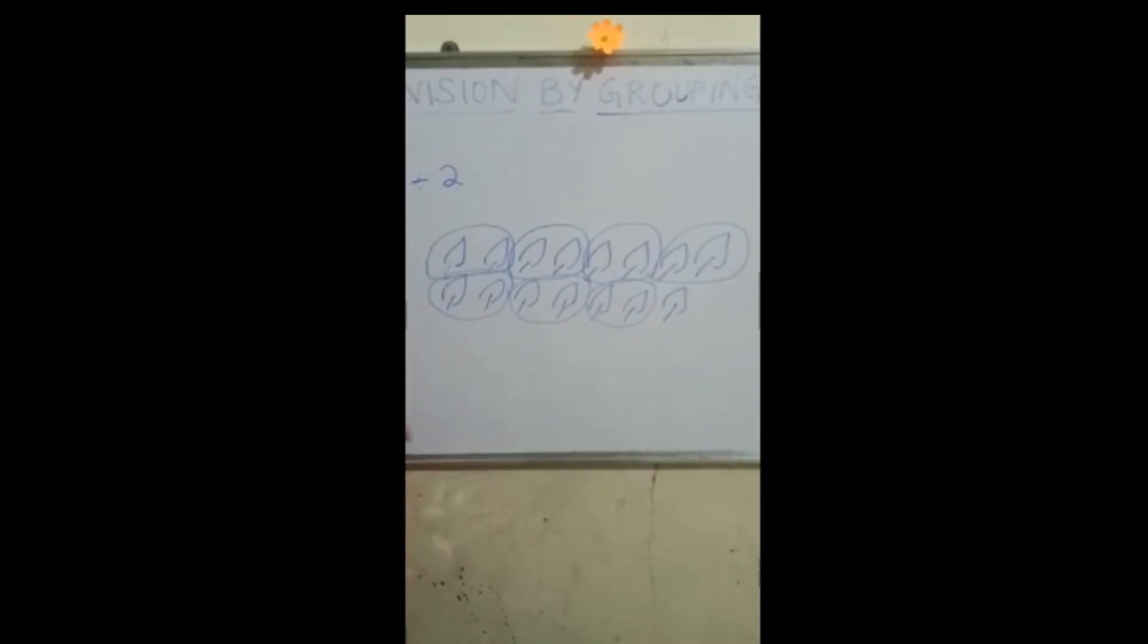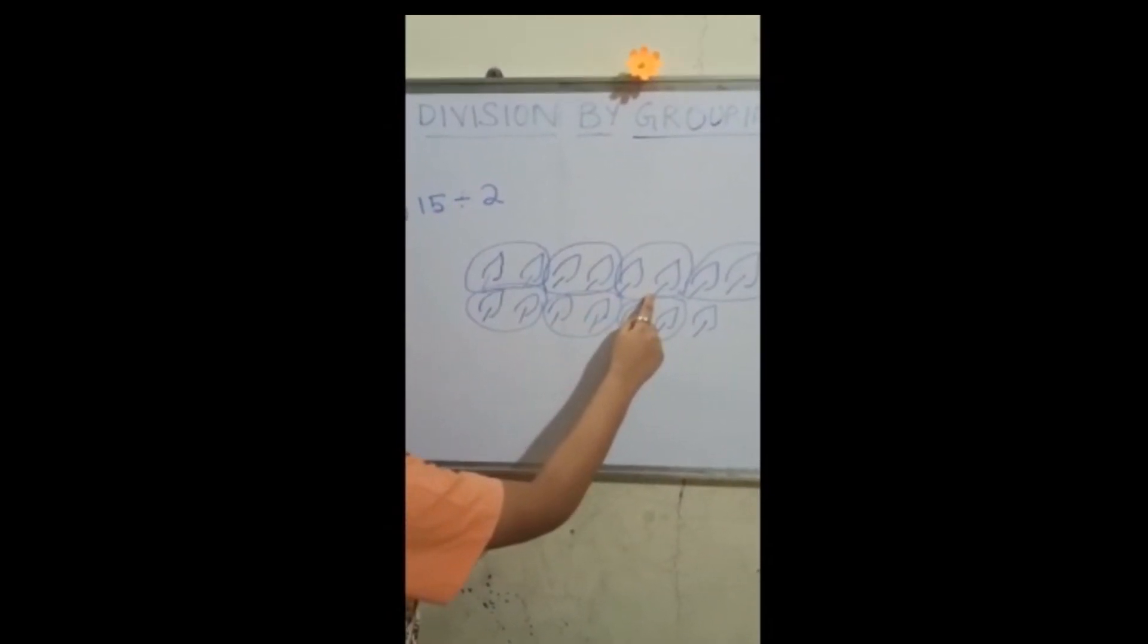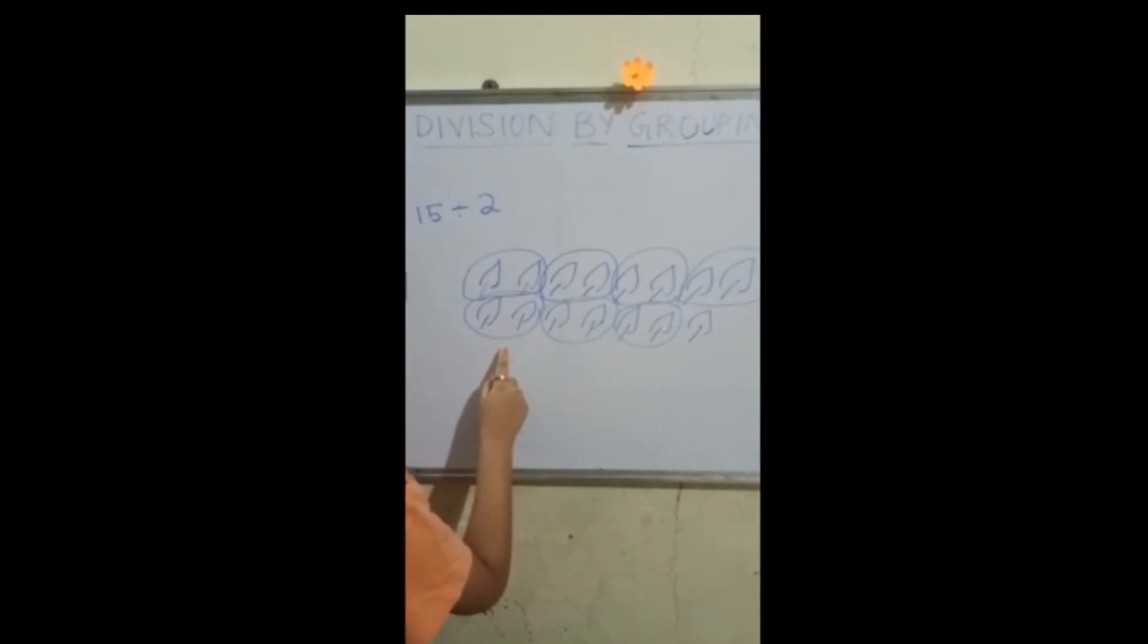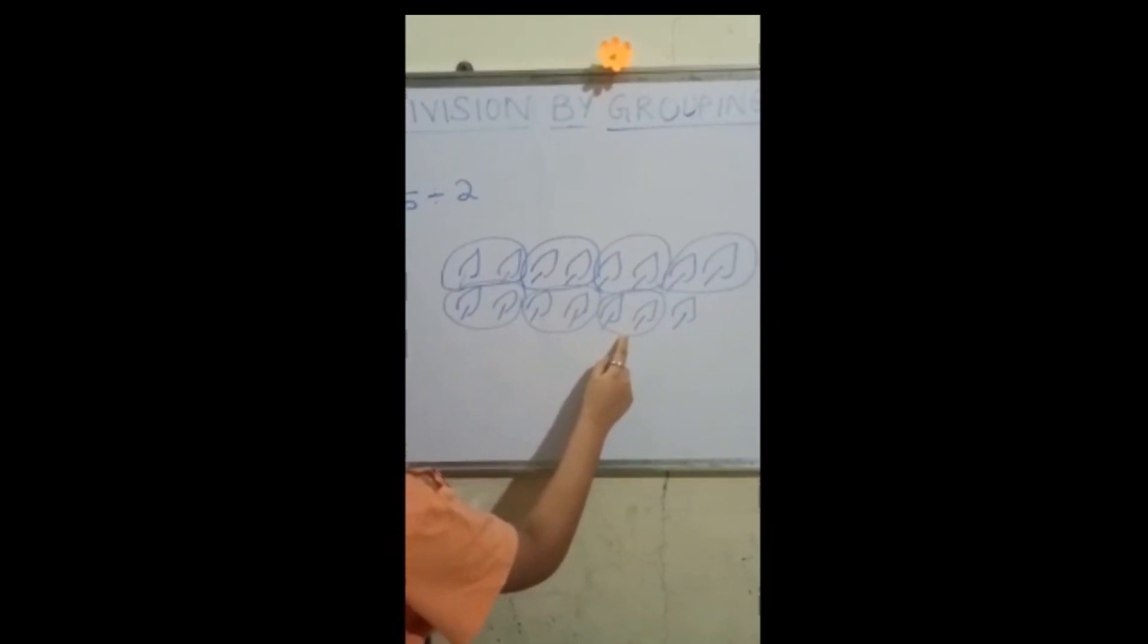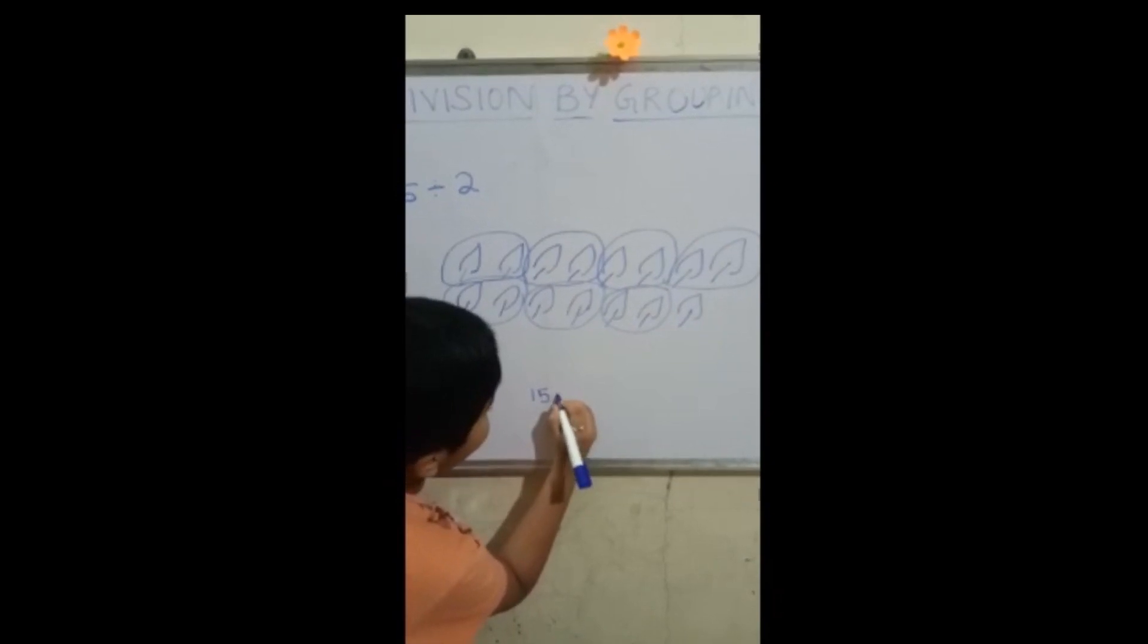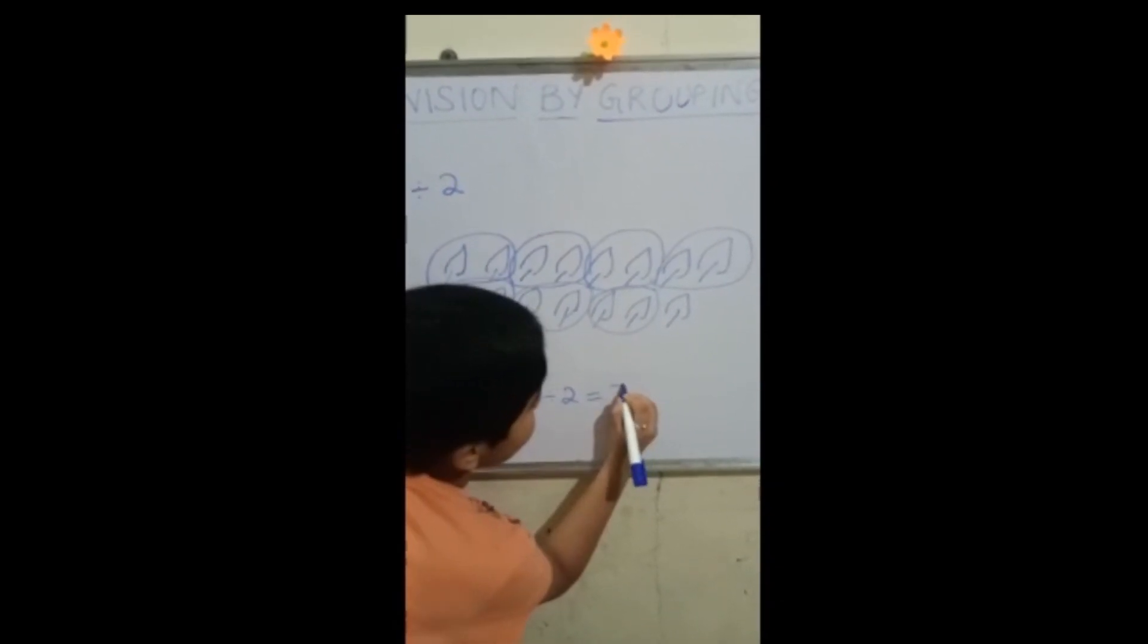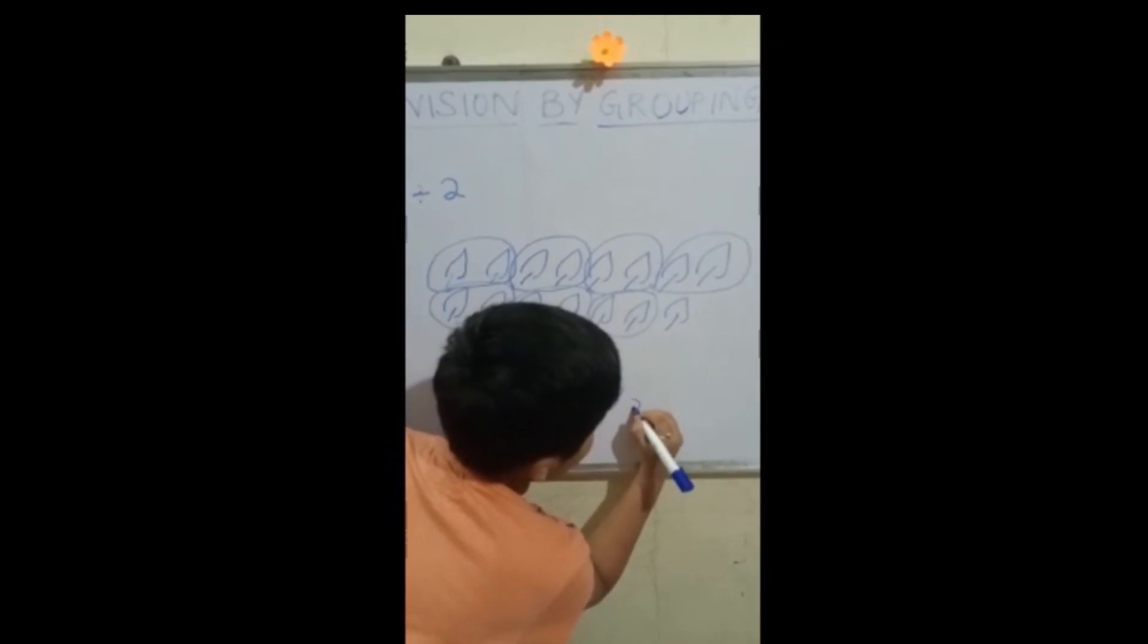Here one leaf is left which is the remainder. Now let us count the groups. One, two, three, four, five, six, seven. So, fifteen divided by two is equal to seven and the remainder is one.